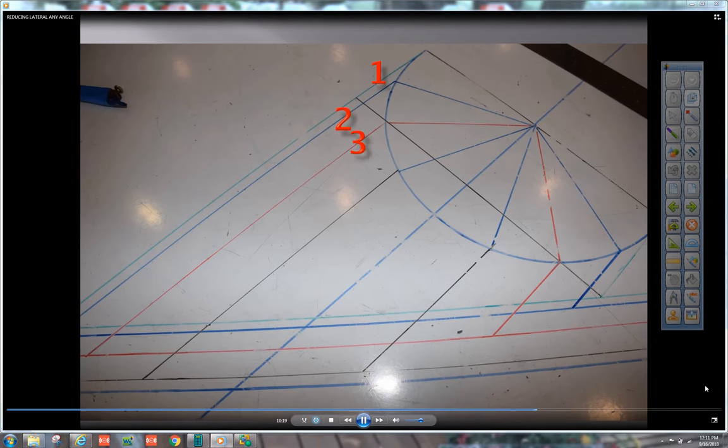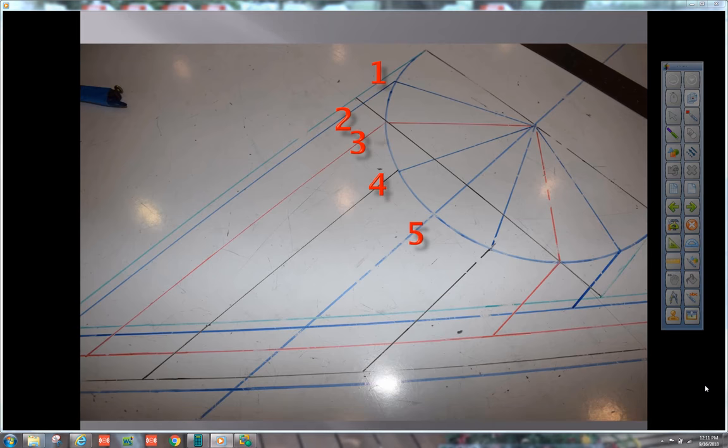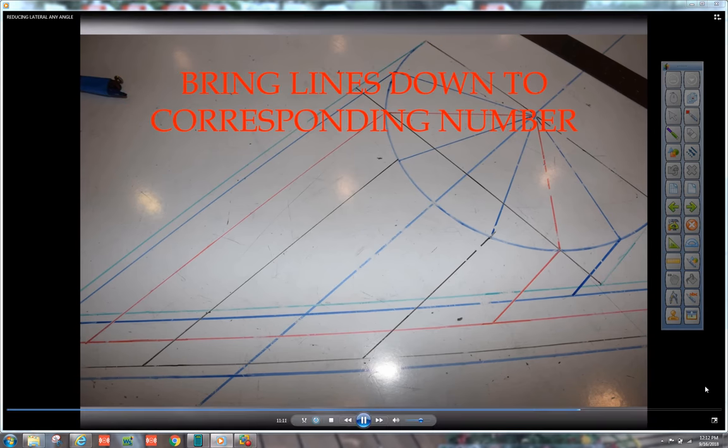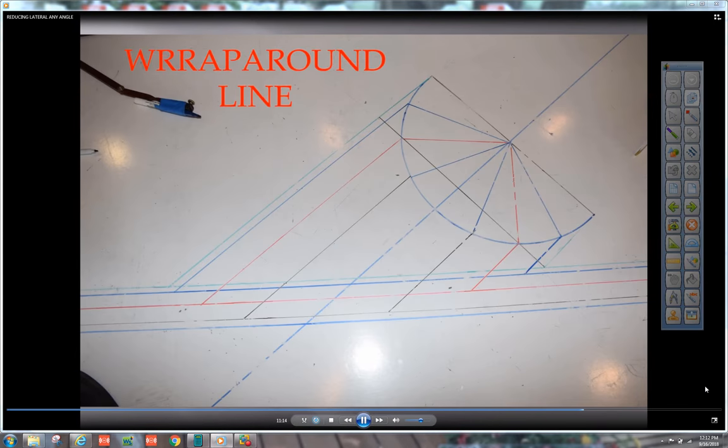One, two, three, four, five, six, seven, eight, nine. The green is one and nine. The blue is two and eight. The red is three and seven. The black is four and six. And the blue is five. You can see how the different colors help you put it all together. The numbers are shown. Bring lines down to the corresponding numbers. And then we need a reference line.